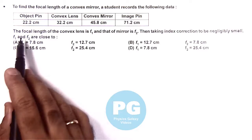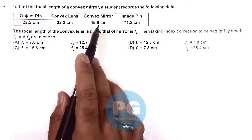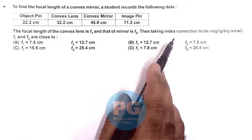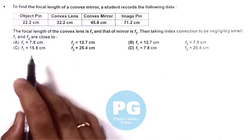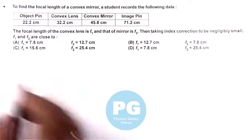It is saying the focal length of convex lens is f1 and that of mirror is f2. Then taking index correction to be negligibly small, we need to check f1 and f2 are close to which of the following values.